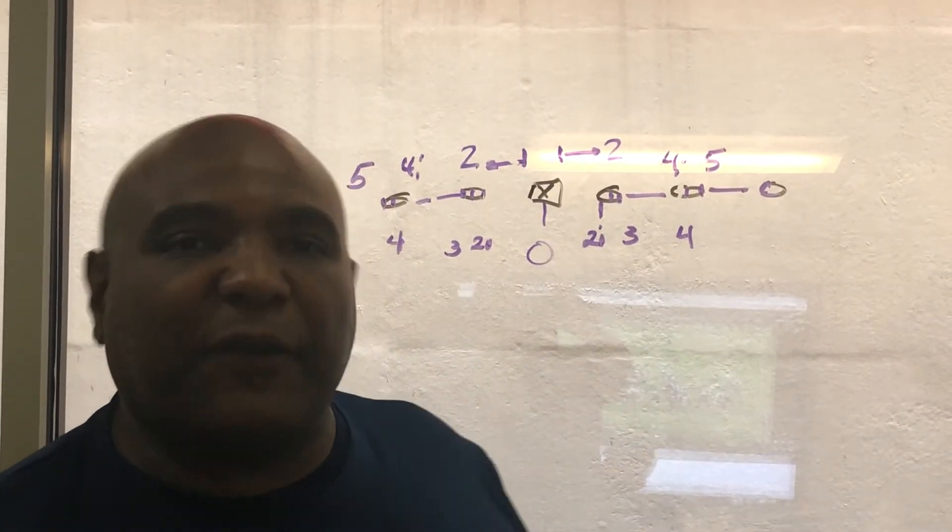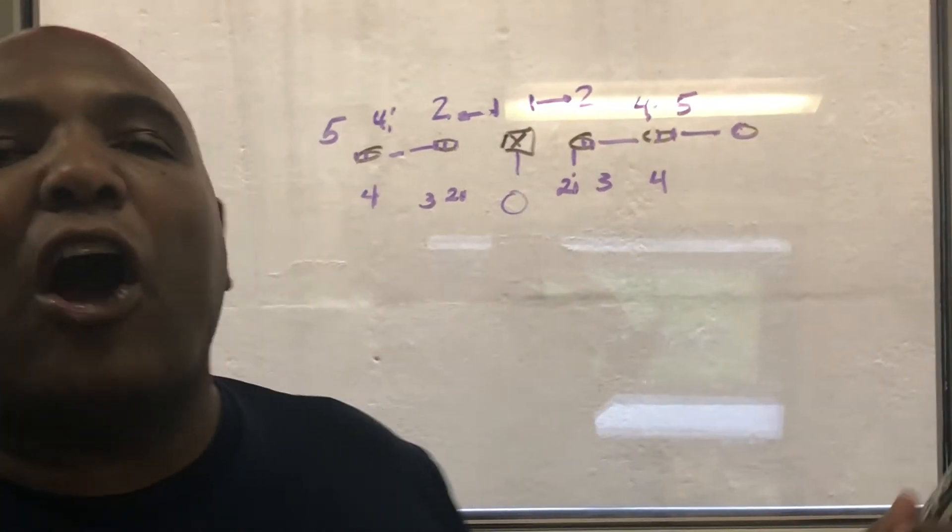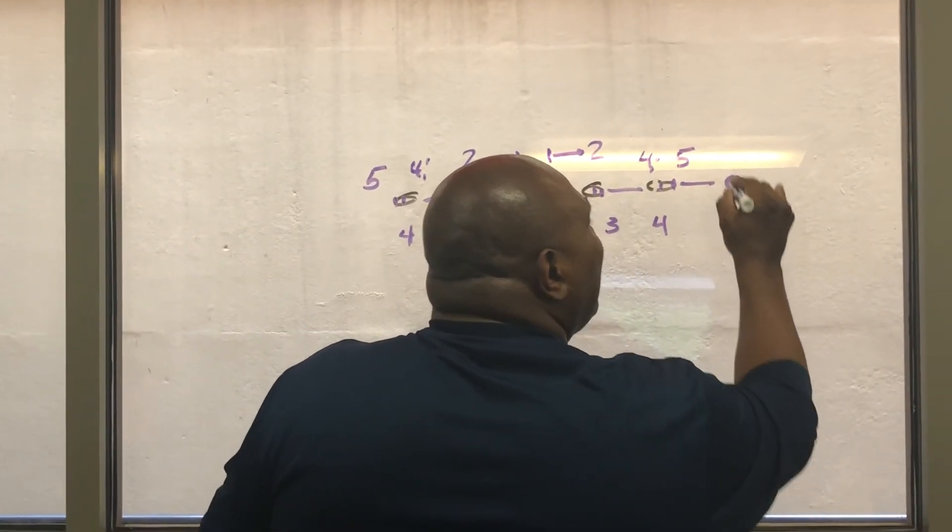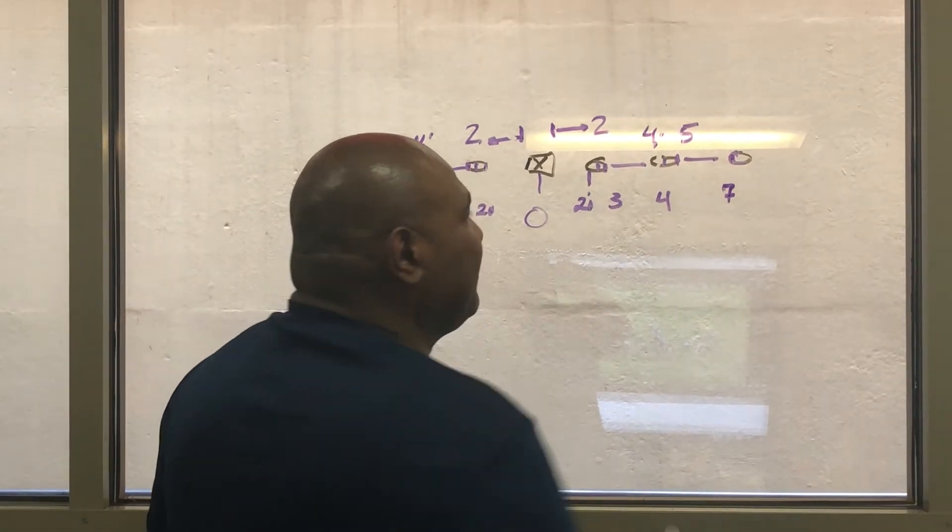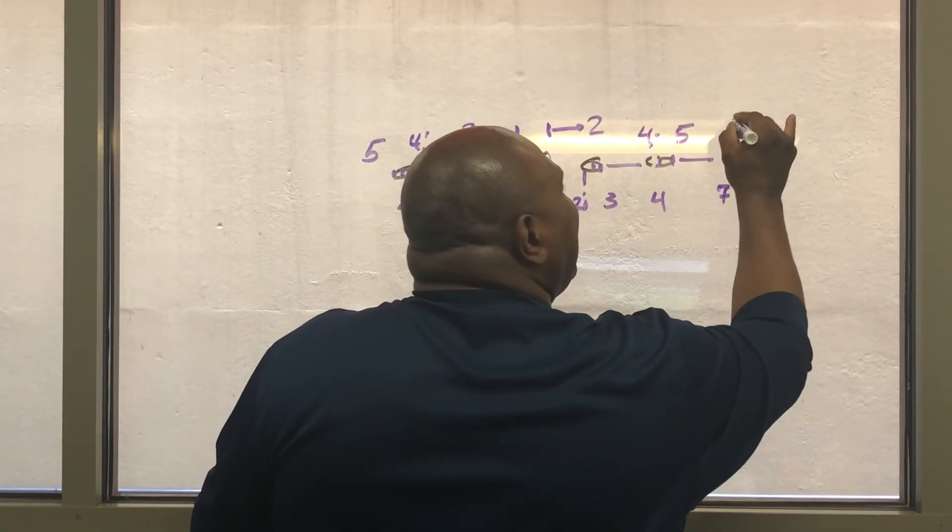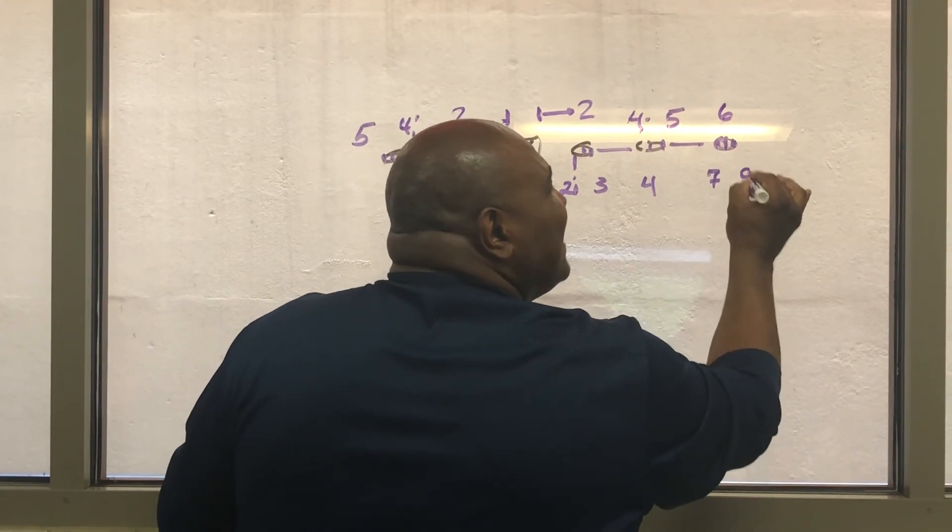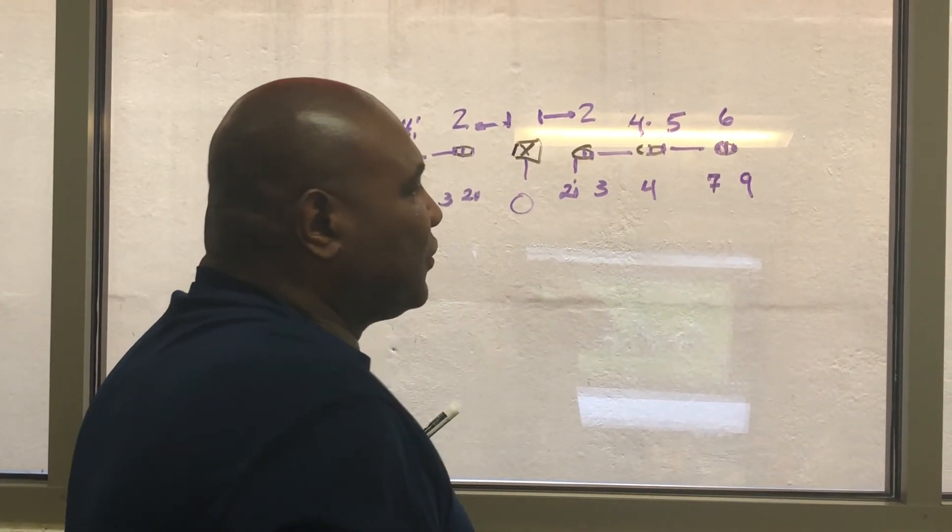Now, we're going to get to what we call the inside shade of the tight end. Now, that numbering system has been different for over many years. I've always employed the seven shade being the inside shade of your tight end. Head up on your tight end is a six. Outside shade of your tight end is a nine technique.